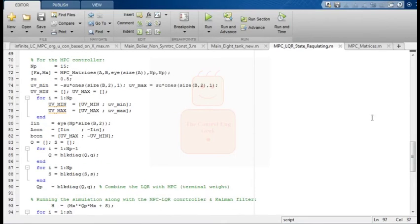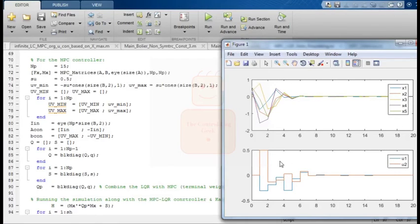We need to run this code three times. One with large horizon of 15 and without the terminal weight. Here in line 90, we just replace the matrix P with matrix Q. Run the script. As can be seen the MPC with long horizon is able to stabilize the process.